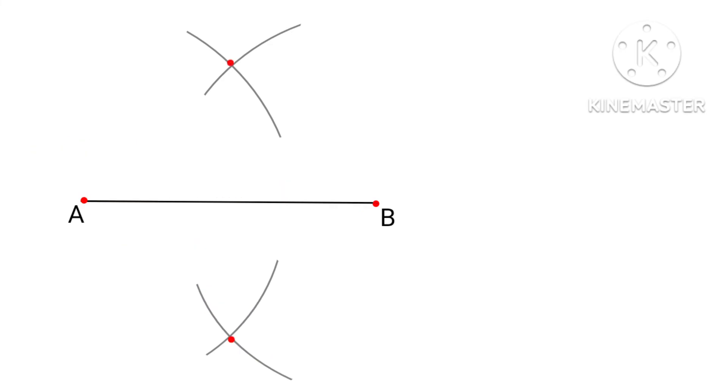Mark the points of intersections of arcs. Join these points. Now, we get a line. This line is perpendicular bisector of line AB.